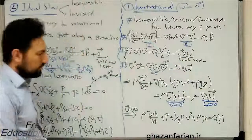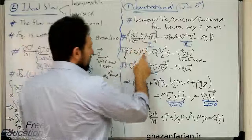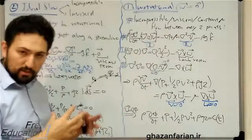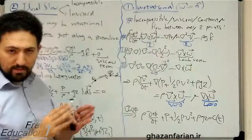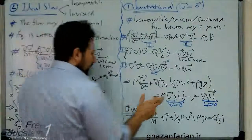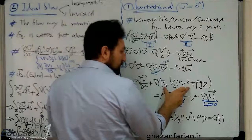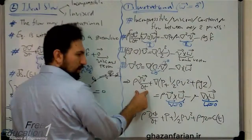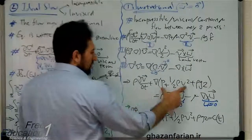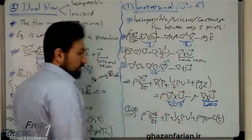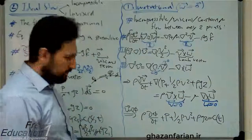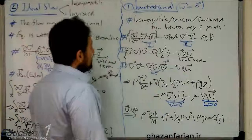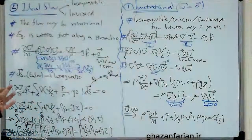Combining the three gradient terms — pressure, the kinetic-energy-like term, and the z-coordinate — and placing them on the left-hand side along with the local acceleration, the right-hand side contains only vorticity-dependent terms: the lambda vector and the curl-of-vorticity term from the second identity.